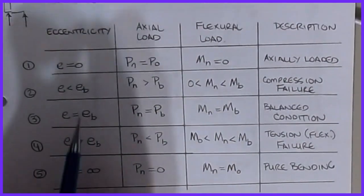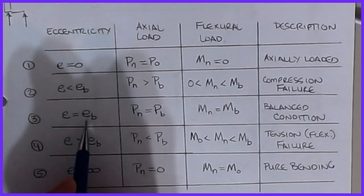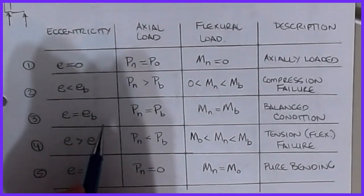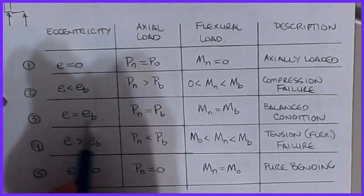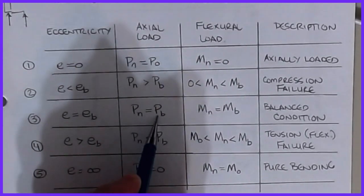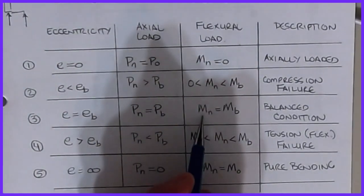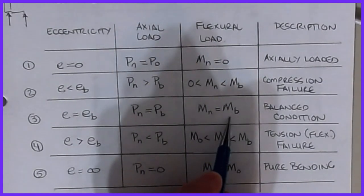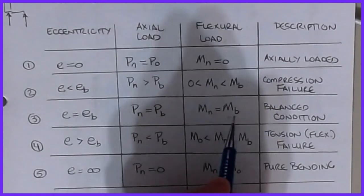Now there is a special point on this curve that we'll show you that's called the balance point. We'll show you how to calculate that. At this point our nominal load has a special axial value and our nominal moment has a special moment value. This is called the balanced condition.